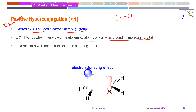In a carbocation example, the empty orbital on the carbocation accepts electron density from the alpha C–H bonds. The electrons from those alpha C–H bonds are delocalized into this empty orbital. With respect to the C–H bond, this is an electron-donating effect, recognized as the +H effect for C–H bonds present at the alpha position of the respective system where the positive charge resides.